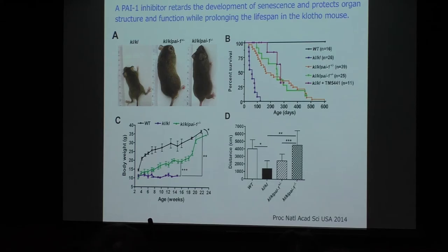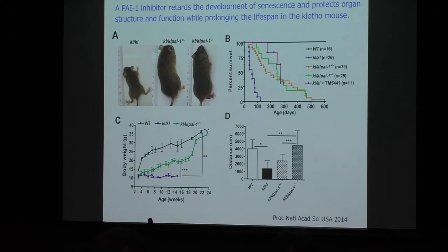The Klotho mouse is also characterized by enormous elevation of PAI-1 levels in tissue and plasma. So we cross-bred with PAI-1 knockout mice or gave PAI-1 inhibitors to the Klotho mice. Crossbreeding with PAI-1 knockout mice or administration of PAI-1 inhibitors completely normalized the phenotypes — lifespan, growth — and corrected all the abnormal pathological changes in the kidney, lung, and bones.